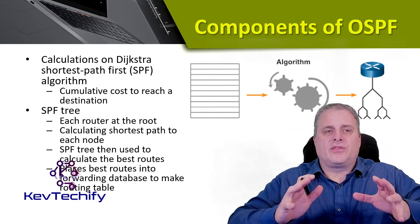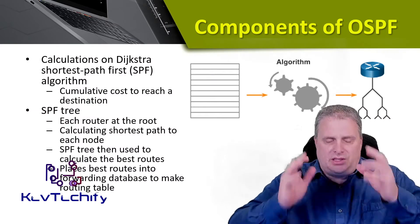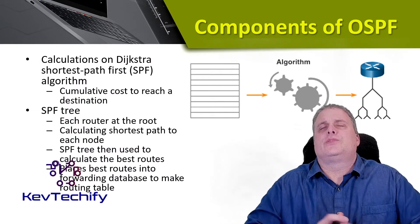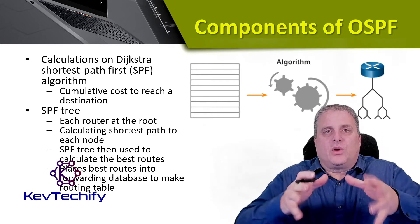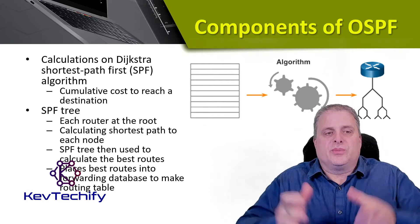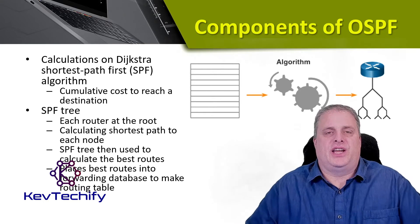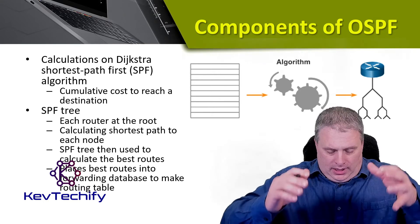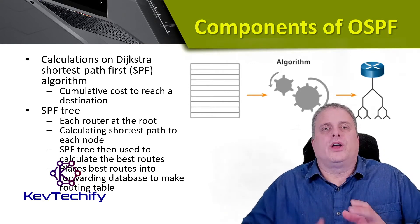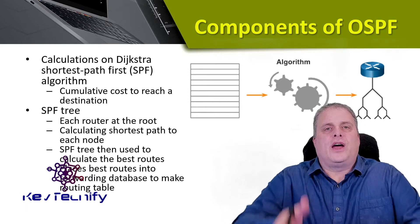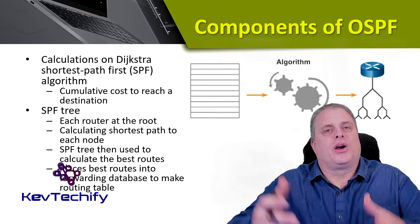OSPF uses the Dijkstra shortest path first algorithm. Basically, in simple terms, this is a cumulative cost to reach the destination. Every time you go through another router or another network, it adds to the cost — it makes that number higher.